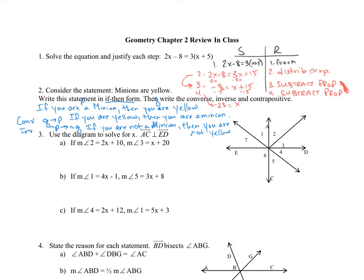And finally the contrapositive — we want to flip it so it's not Q to not P. We switch it around and put nots. So in this case we say: if you are not yellow, then you are not a minion.